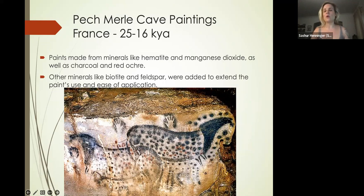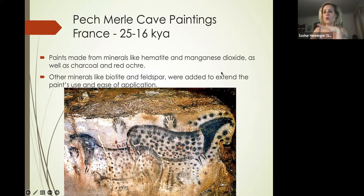We found out how they were doing it from a second cave example—Pech Merle in France. What we think people did was chew up minerals like hematite, which is orange-red, and manganese oxide, charcoal, and red ochre—black, red, and orange pigments common in these minerals.